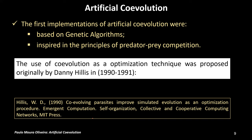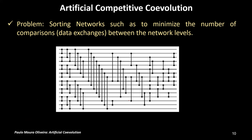Regarding artificial coevolution, which is the theme of this video, the first implementations were based on genetic algorithms and inspired by the principles of the predator-prey relationship. The first use of coevolution as an optimization technique was proposed originally by Danny Hillis in 1991. The paper is entitled 'Co-evolving Parasites Improved Simulated Evolution as an Optimization Procedure.' Danny Hillis tried to solve a sorting network problem, with the objective to minimize the number of comparisons or data exchanges between the network levels. He achieved better results with competitive coevolution.